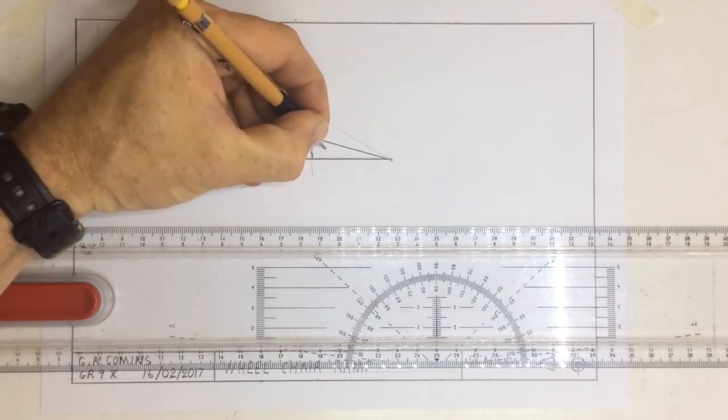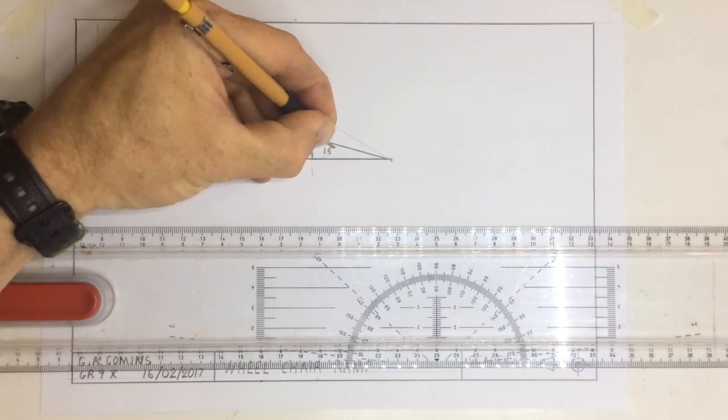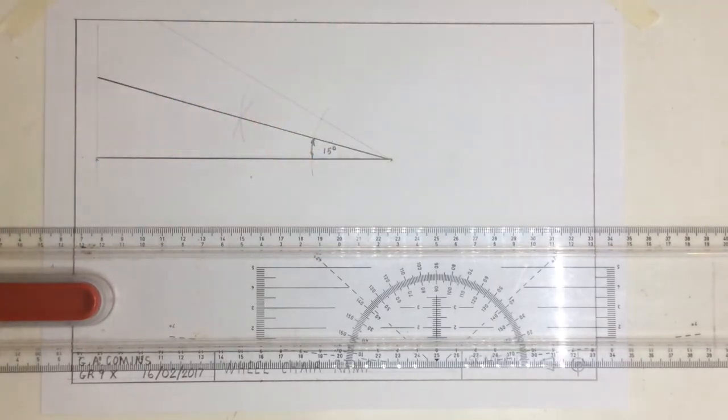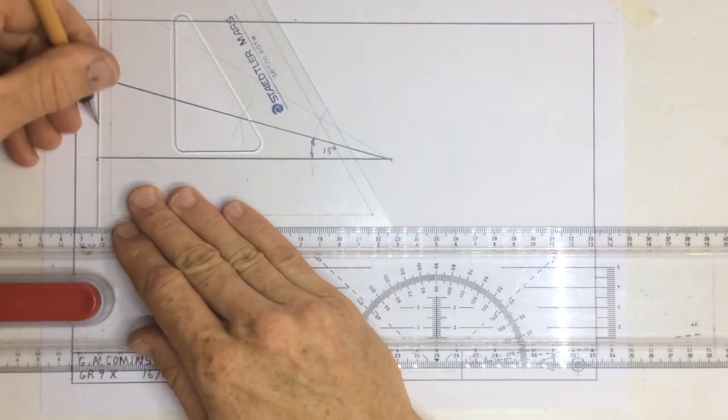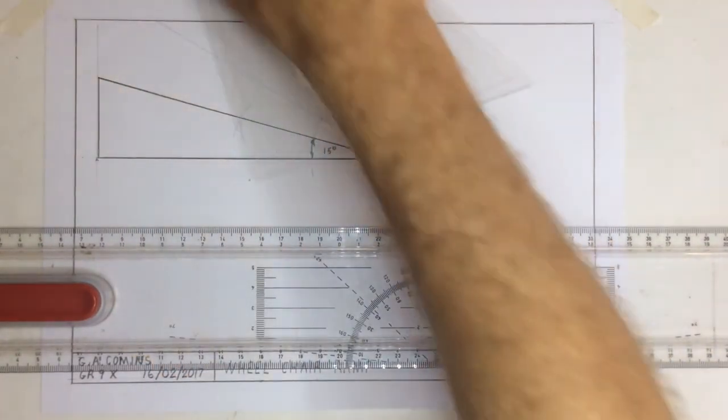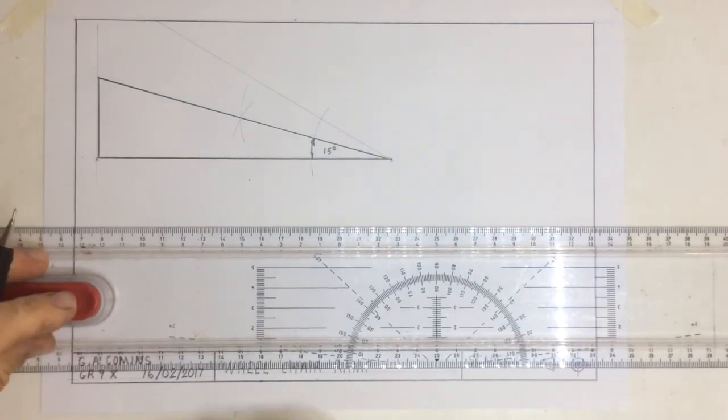I can draw a little dimensioning arc over there and write in 15 degrees. Once I've done that, I can now draw in this perpendicular line and that is our front view.